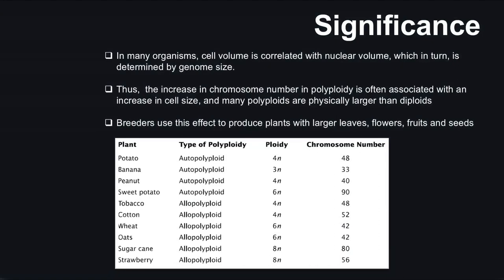Breeders use this effect to produce plants with larger leaves, flowers, fruits, and seeds, increasing production. An important technique is the use of colchicine: plant breeders use colchicine to create polyploid cells because it prevents spindle fiber formation. This causes chromosomes to fail to separate properly and cytokinesis does not complete, so the total chromosome number remains doubled, enabling tetraploid formation. Triploid plants can also be made artificially this way and then propagated asexually for cultivation.